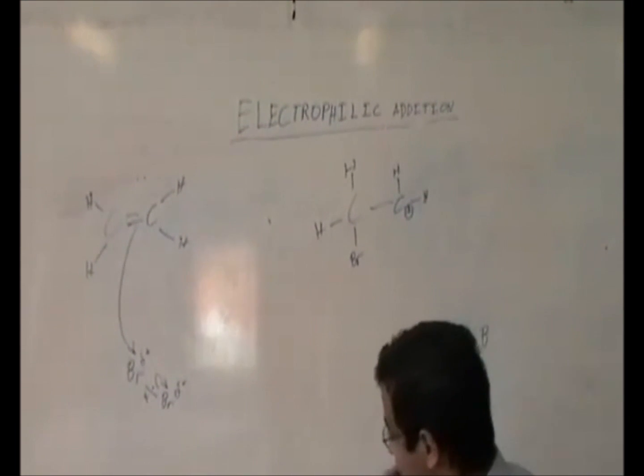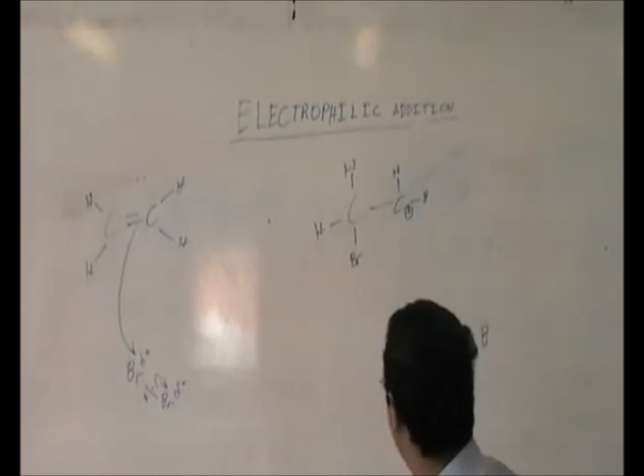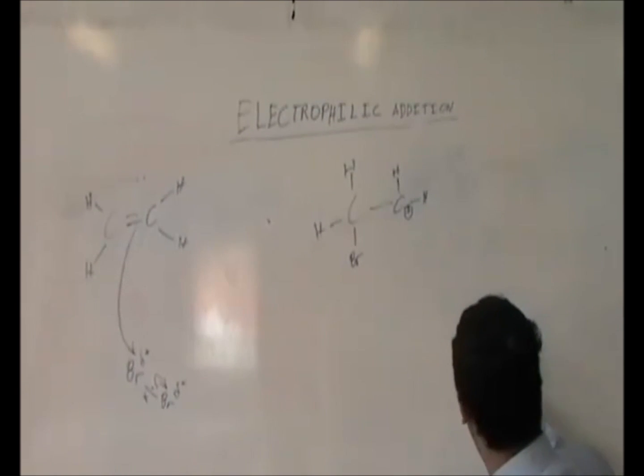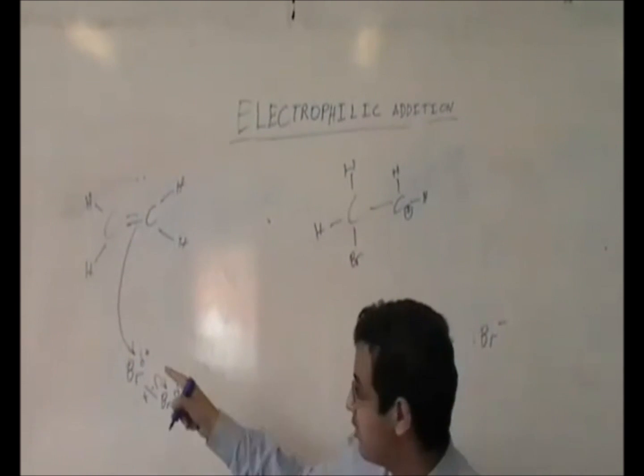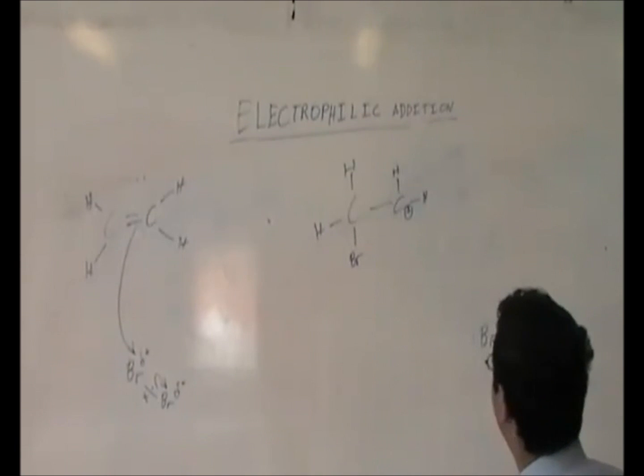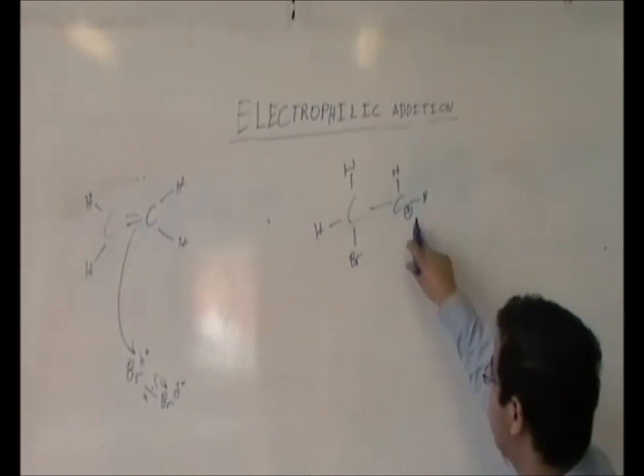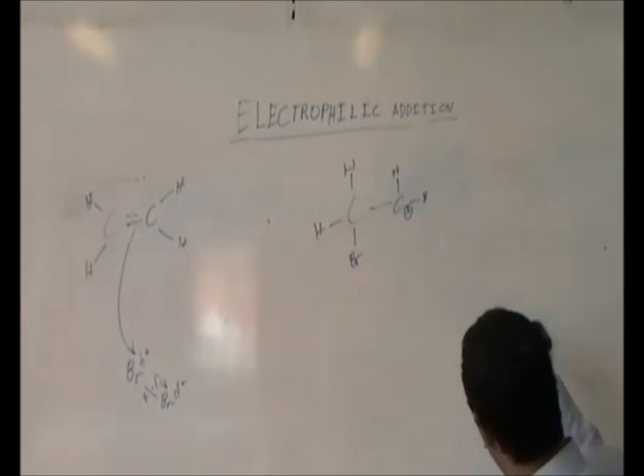However, left from this is a bromine with a negative sign, because it has gained an electron from this movement. As a result, negative ion, positive ion, of course they attract.